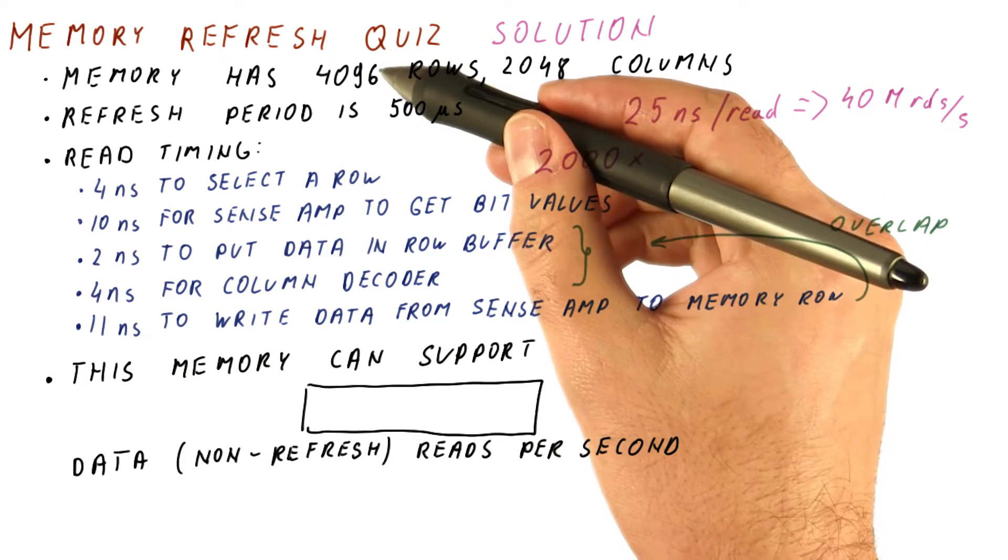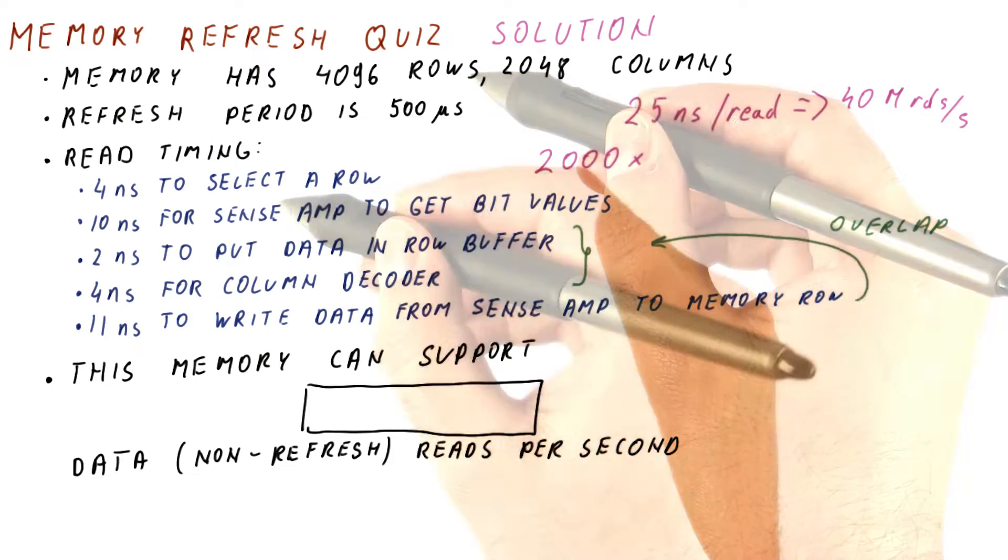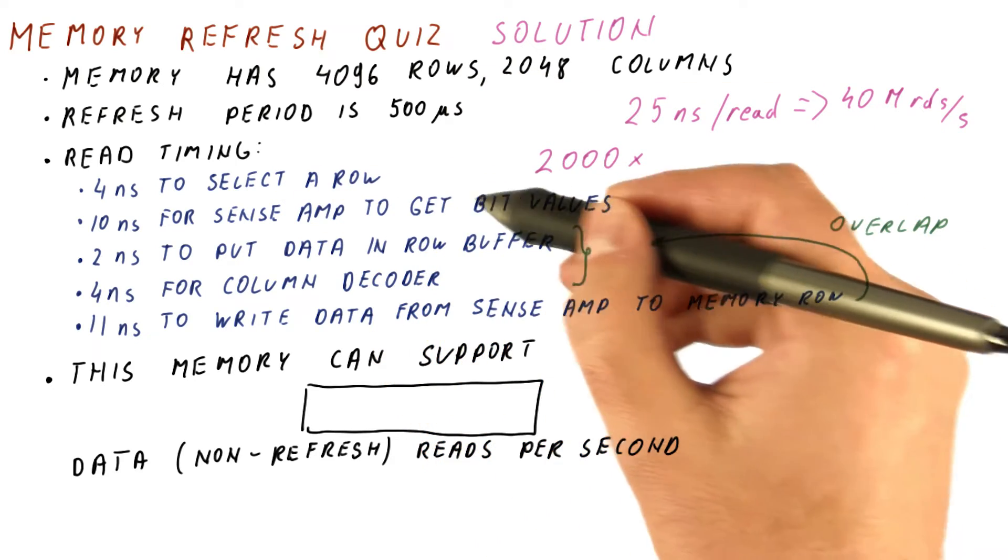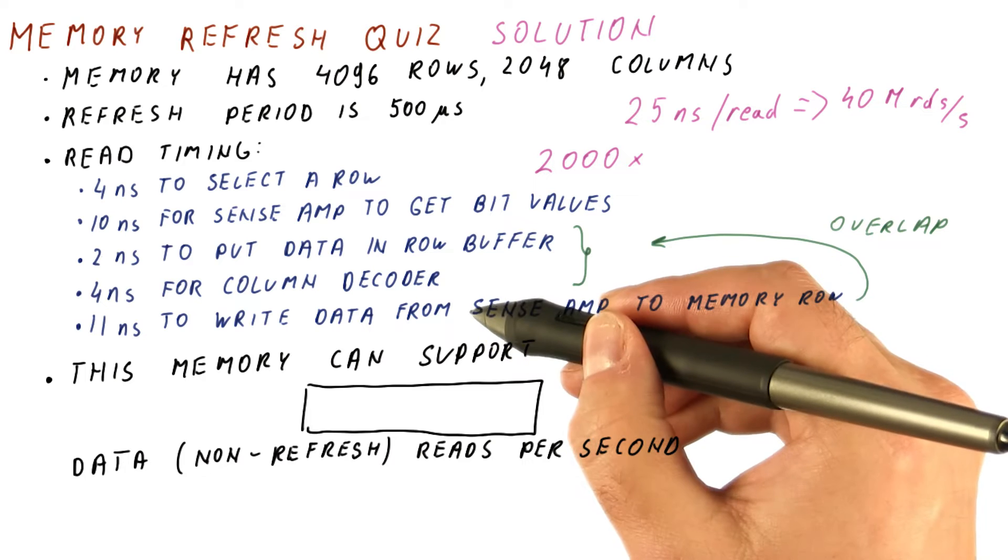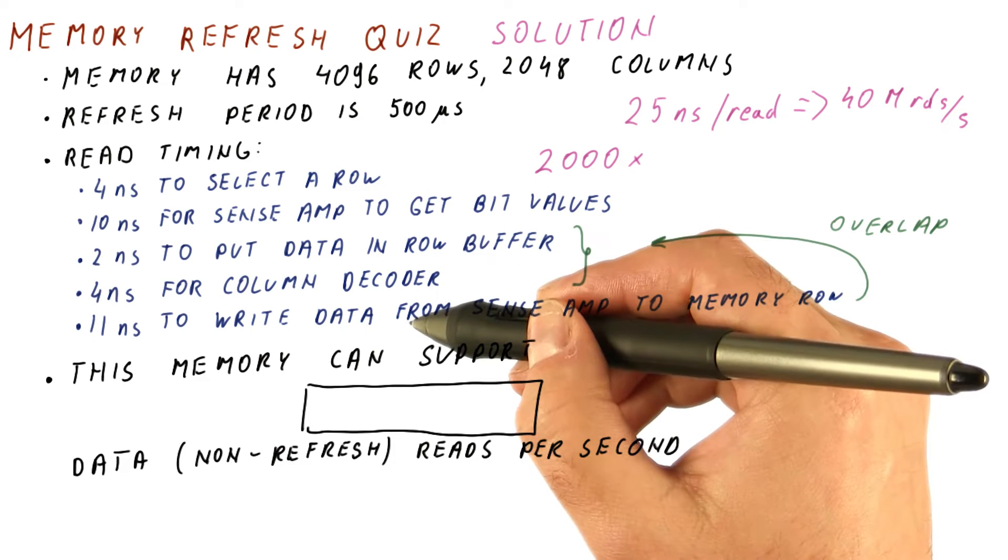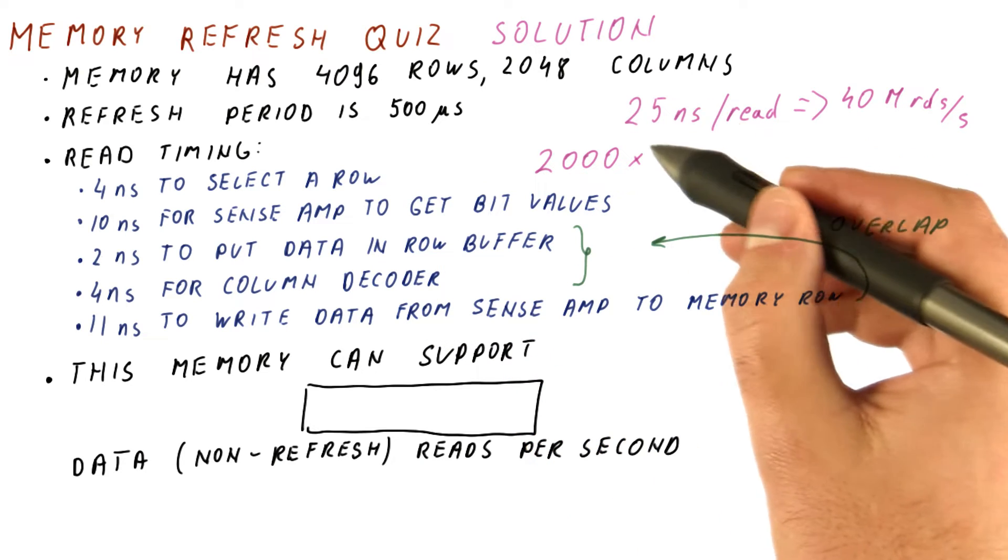We need to do a refresh of each of the rows. To do that, the row needs to be selected. We need to get the bit value and write it back, so it takes the same time to do a refresh of the row as it takes to do a read.